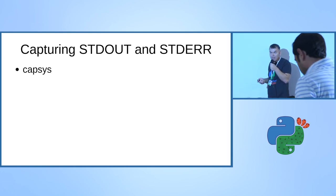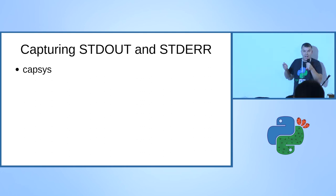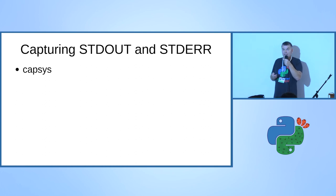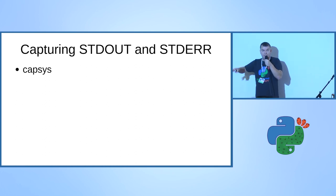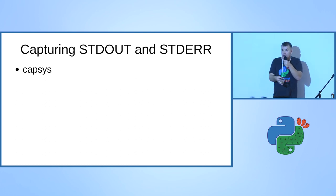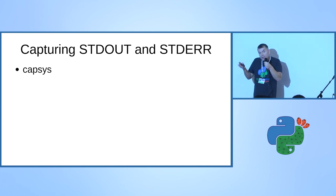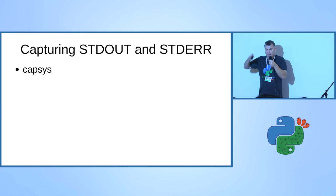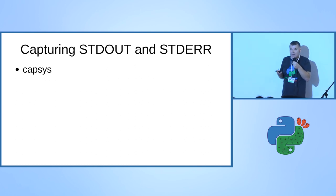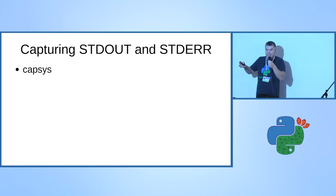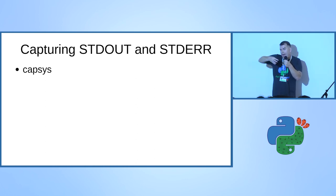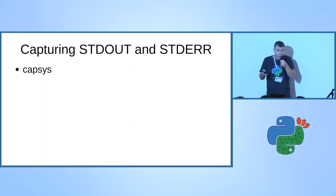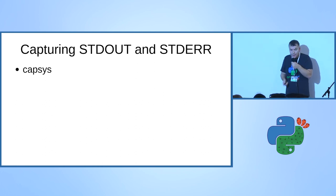The next fixture I'd like to talk about is called 'capsys'. It allows us to capture standard output and standard error - whatever is printed out. Normally in an application you'd have a separate function to print to the screen and a separate function to do actual stuff, but in the real world many applications have it intermixed and just print things during execution.